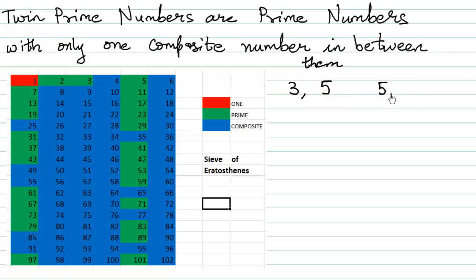In other words, if I subtract 5 and 3, I am going to get exactly 2. So, 3 and 5 are said to be twin prime numbers. Similarly, 5 and 7 only has a 6 in between them. So, 5 and 7 are also twin prime numbers.